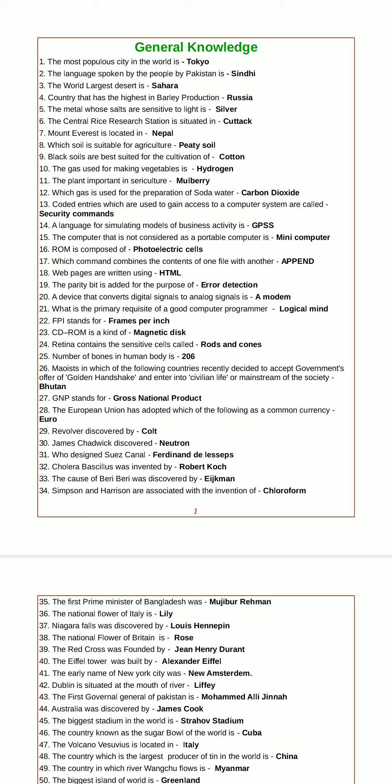Maoists in Nepal recently decided to accept a government offer of golden handshake and enter into civilian life and mainstream society. The revolver was discovered by Colt. James Chadwick discovered the neutron. Cholera bacillus was discovered by Robert Koch.